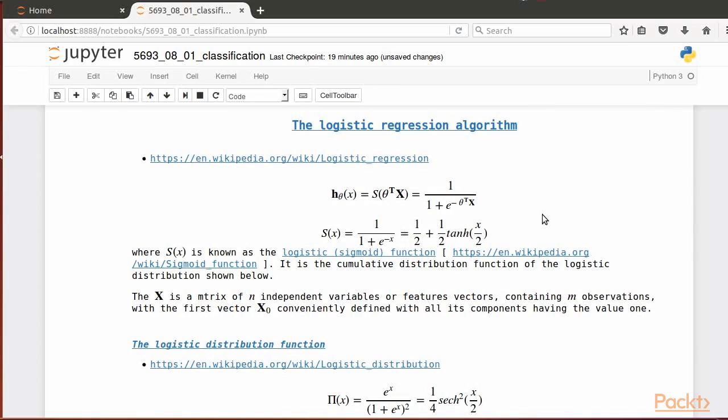The logistic regression algorithm is one of the most widely used learning algorithms for tackling classification problems. In the case of the binary classification problem, in which the outcome will take the values of zero and one, the standard approach is to think about the probability for those values to happen. In this case, a hypothesis h of theta of x is proposed.